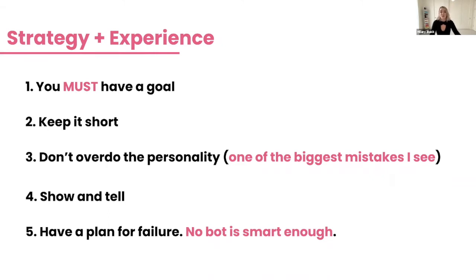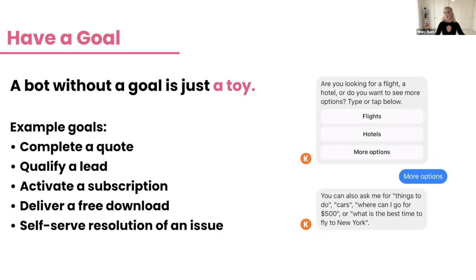Number one: you must have a goal. Number two: keep it short. Number three: don't overdo the personality — this is one of the biggest mistakes I see, focusing on personality exclusively when it is not the end-all be-all of a good chatbot. Number four: show and tell. Number five: have a plan for failure, because no bot is smart enough — it doesn't matter how good you think your NLP engine is.